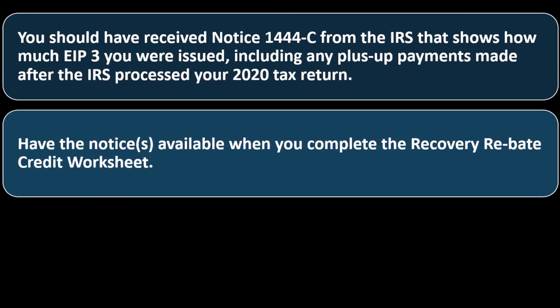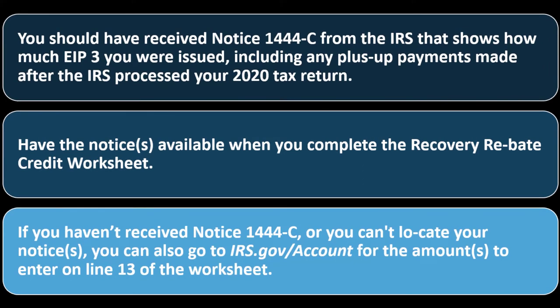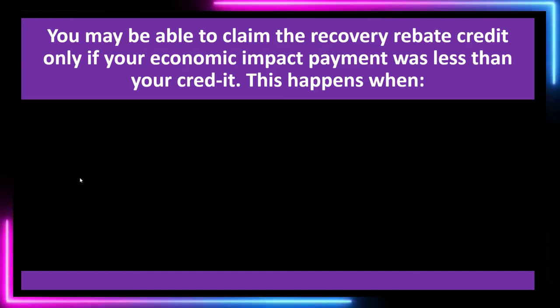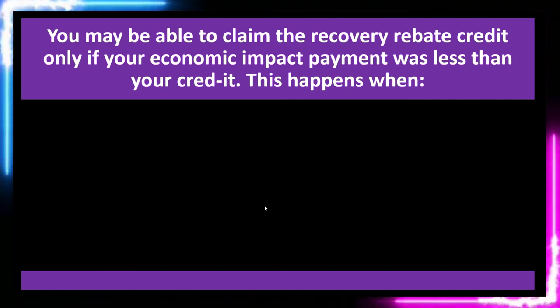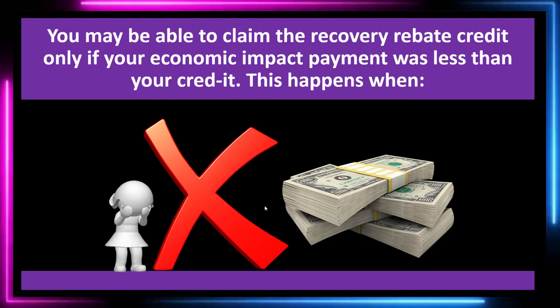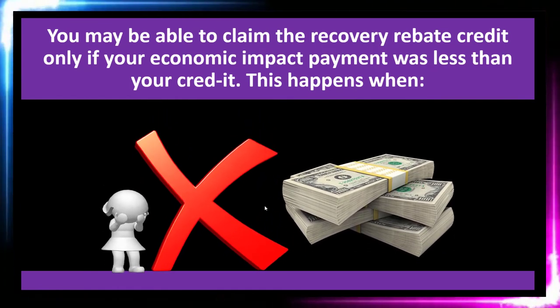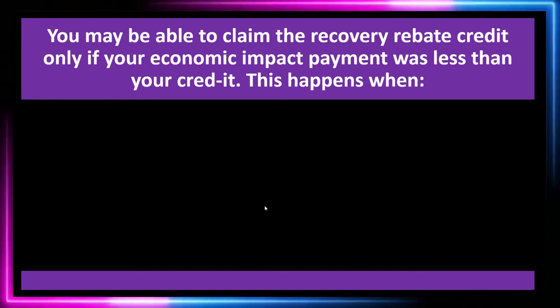Have the notices available when you complete the recovery rebate credit worksheet. If you haven't received Notice 1444-C or can't locate your notices, you can go to irs.gov/accounts for the amounts to enter on line 13 of the worksheet. You may be able to claim the recovery rebate credit only if your economic impact payment was less than your credit — meaning the payment was wrong because they based it on 2019 or older information and didn't have all the information needed for 2021.